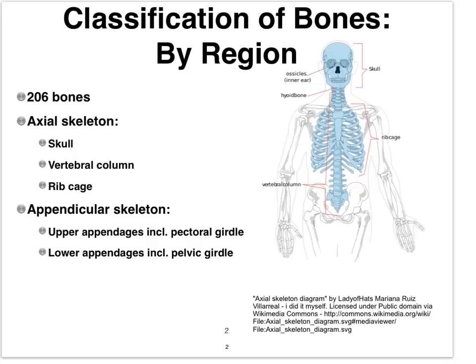One way to classify this big pile of 206 bones is to organize them according to what region they occur in. Based on that, we have what we call the axial skeleton, which forms the axis of the body, versus the appendicular skeleton, which forms your appendages. In the figure, all of the blue represents the axial skeleton.